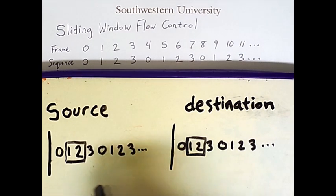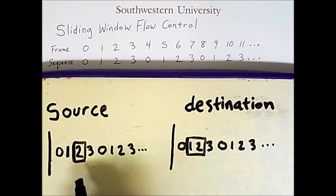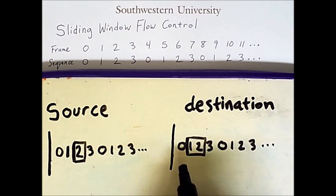It is possible that the source can continue sending frames even though it has not yet received an acknowledgement. In fact, that is what will happen next. The source sends frame 1. Now, two frames have been sent, and so far, only one has been received at the destination.